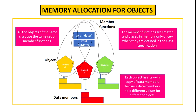It is very important to note that all objects have their own copy of data members and they share the same copy of member functions. This is possible because each object holds different values for its data members. Objects S, S1, and S2 of class student each have a different copy of data members. Member functions are created and placed in memory only once when defined in the class specification, and all objects share the same copy, because at a time only one object can invoke a particular member function — two objects cannot invoke the same member function simultaneously.